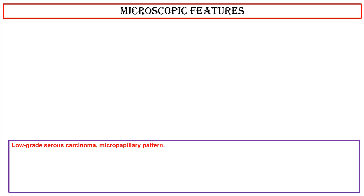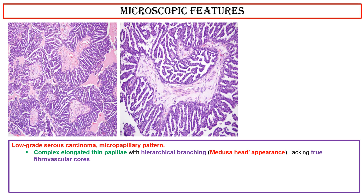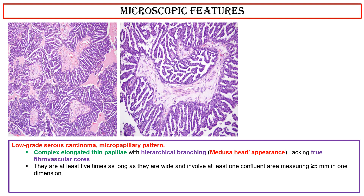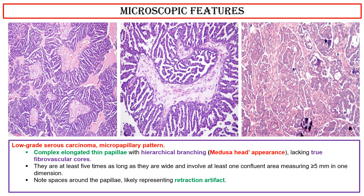Microscopic features of low-grade serous carcinoma, micropapillary pattern: These two photos show complex elongated thin papillae with hierarchical branching, a medusa-head appearance, lacking true fibrovascular cores. They are at least 5 times as long as they are wide and involve at least one confluent area measuring equal to or more than 5 mm in one dimension. Note in this photo spaces around the papillae, likely representing retraction artifacts.